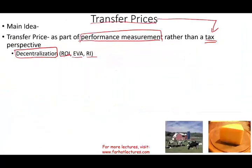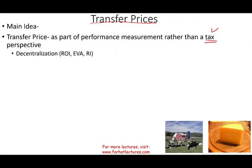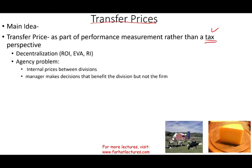Let's go back to transfer prices. What's the issue with transfer prices? We may have various divisions that sell to each other, and as a result we might have what we call an agency problem, where internal prices between divisions are set to benefit the managers of the division rather than the company as a whole. It means the manager is making decisions based on prices to benefit themselves, not the firm. So transfer prices can amount to an agency problem.